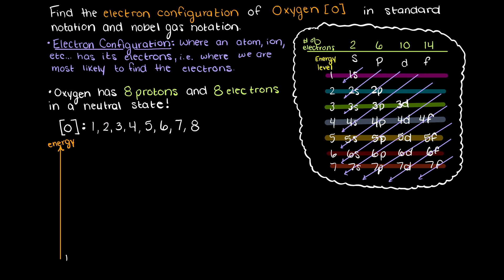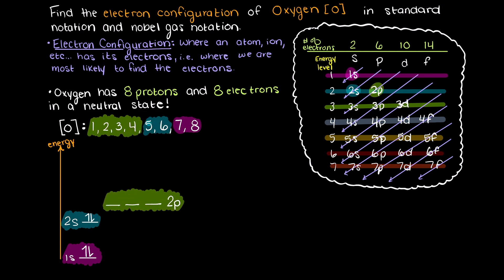We always begin with 1s, and as we discussed before, s subshells can hold 2 electrons, so that leaves us with 6 electrons left to place. Following our arrows, next we have 2s, which again can hold 2 electrons. Therefore we have 4 electrons to place.